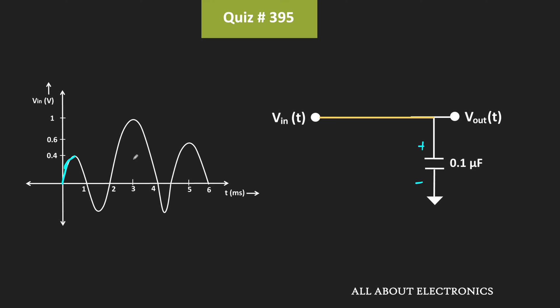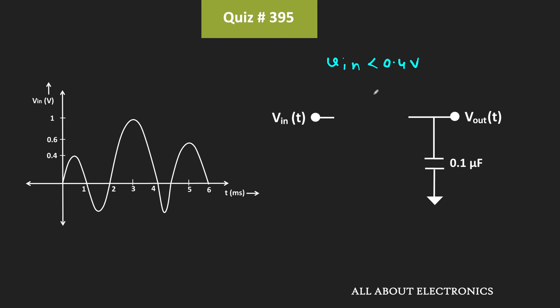So during the first peak it will charge up to 0.4V, and after the first peak the input voltage is reducing. Therefore once again this diode will act as an open circuit, because until this Vin is less than 0.4V, up to that point this diode will act as an open circuit — because up to that point the voltage at the anode is less than the cathode.